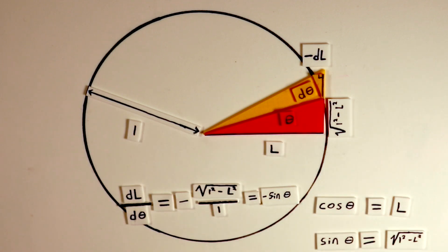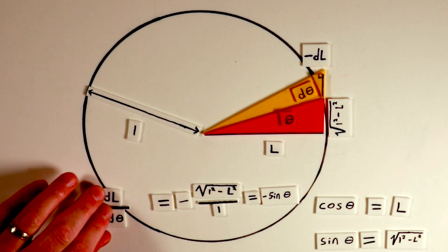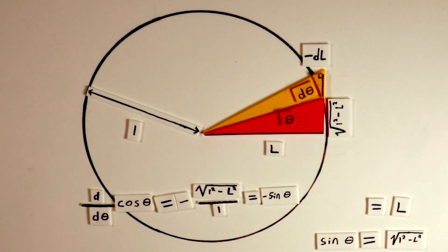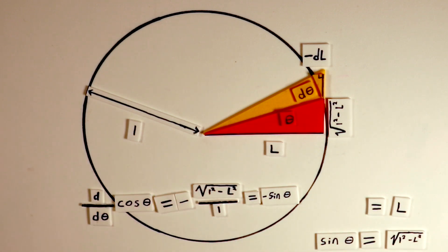The ratio dL d theta is essentially the derivative of the cosine of theta with respect to theta. Hence the derivative of the cosine function is minus sine theta. This connection is a fundamental aspect of calculus, linking the rate of change of the cosine function to the sine function, but with a negative sign. Thus we've used the properties of similar triangles and limits to relate small changes in the lengths of the sides of a triangle, dL and d theta, to the trigonometric functions sine and cosine.